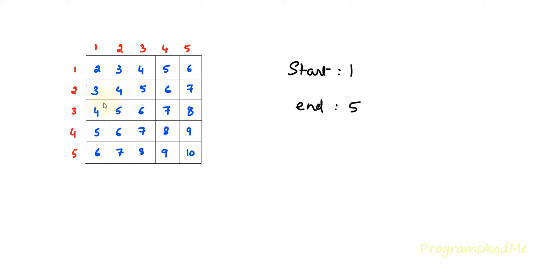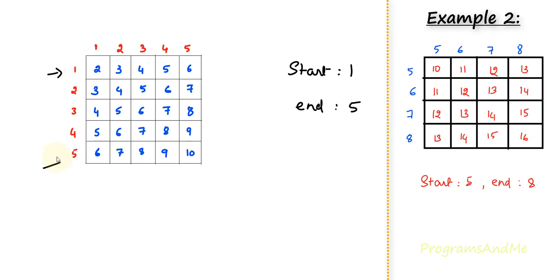In the next row we will get 2 plus 1 equals 3, 2 plus 2 equals 4, 2 plus 3 equals 5, 2 plus 4 equals 6, and 2 plus 5 equals 7, and so on till 5. This is the starting value of the table, this is the ending value of the table, and when entering the input, the start value needs to be smaller than the end value.